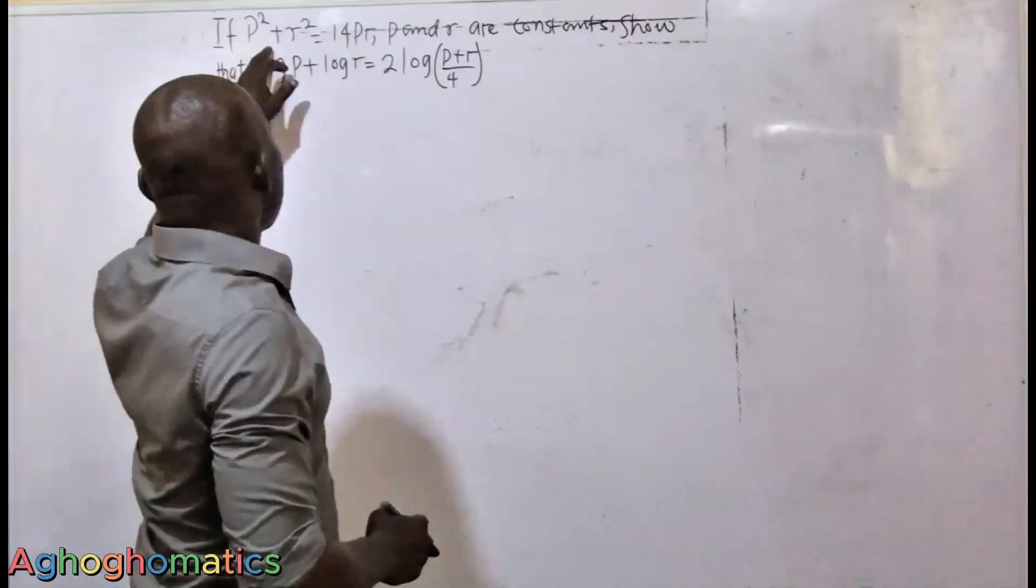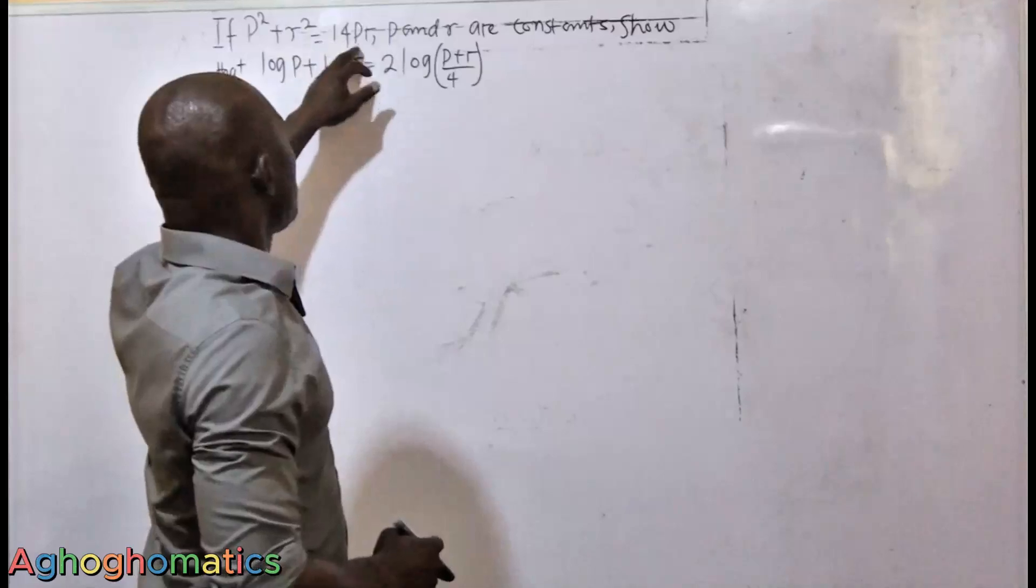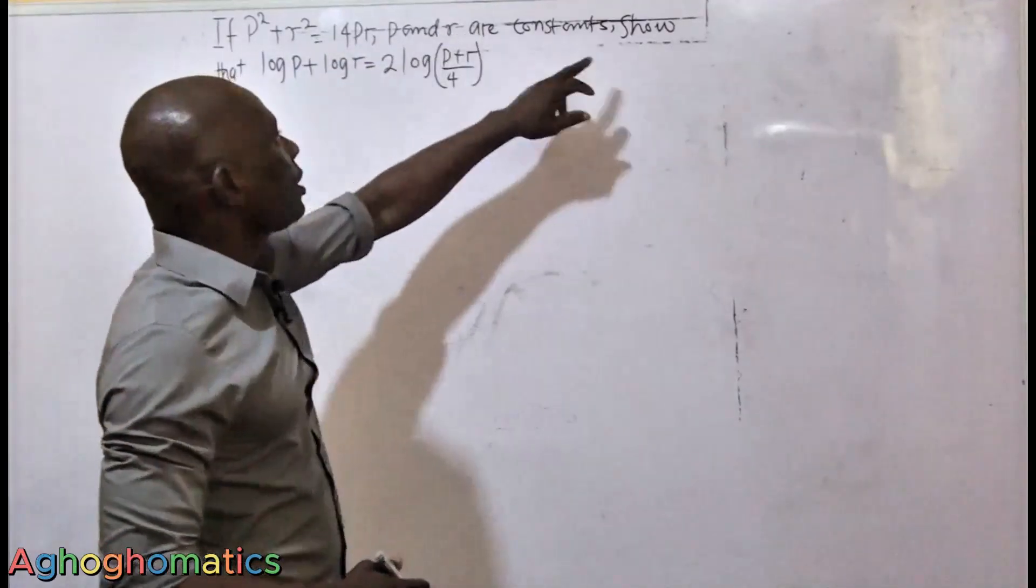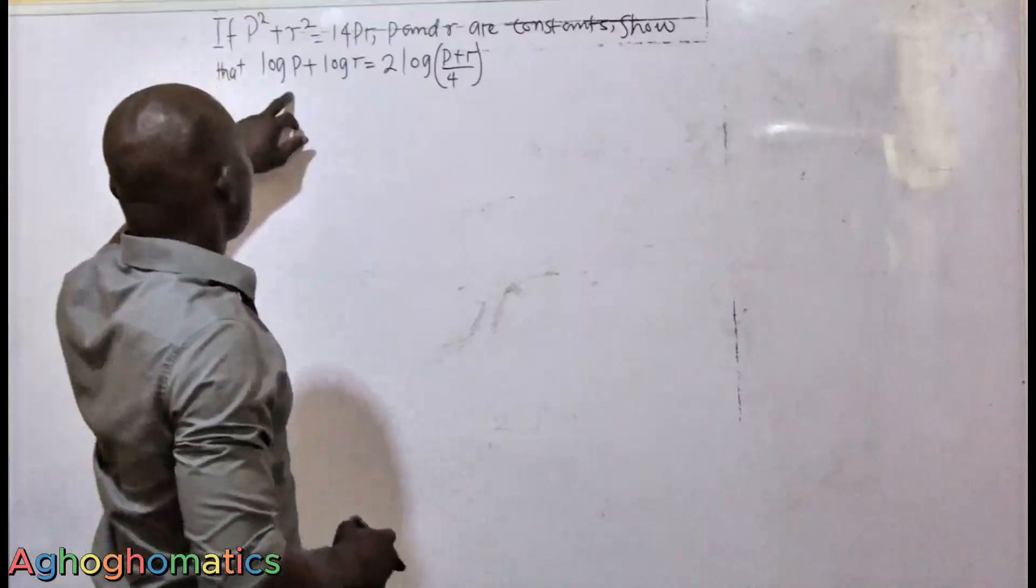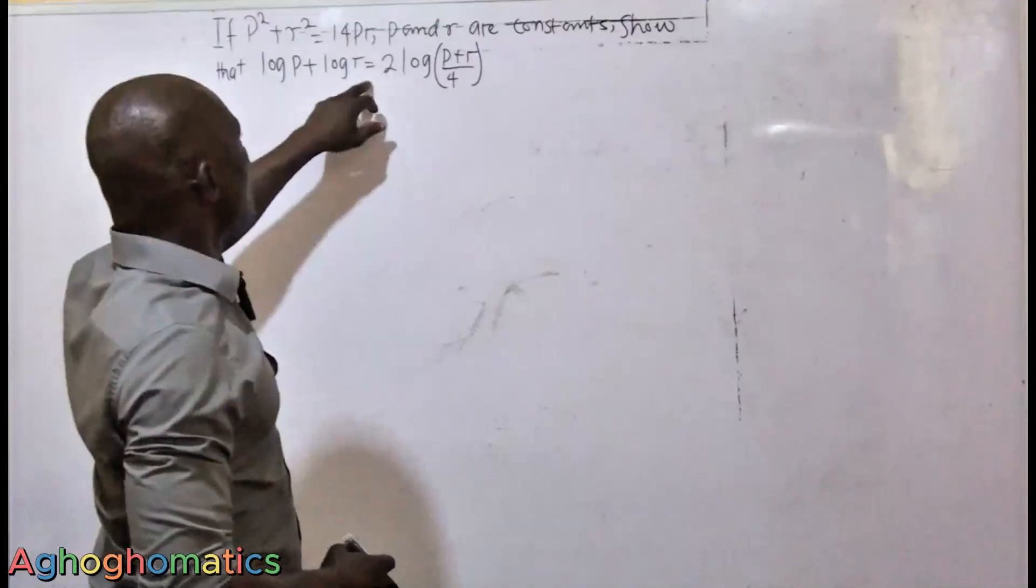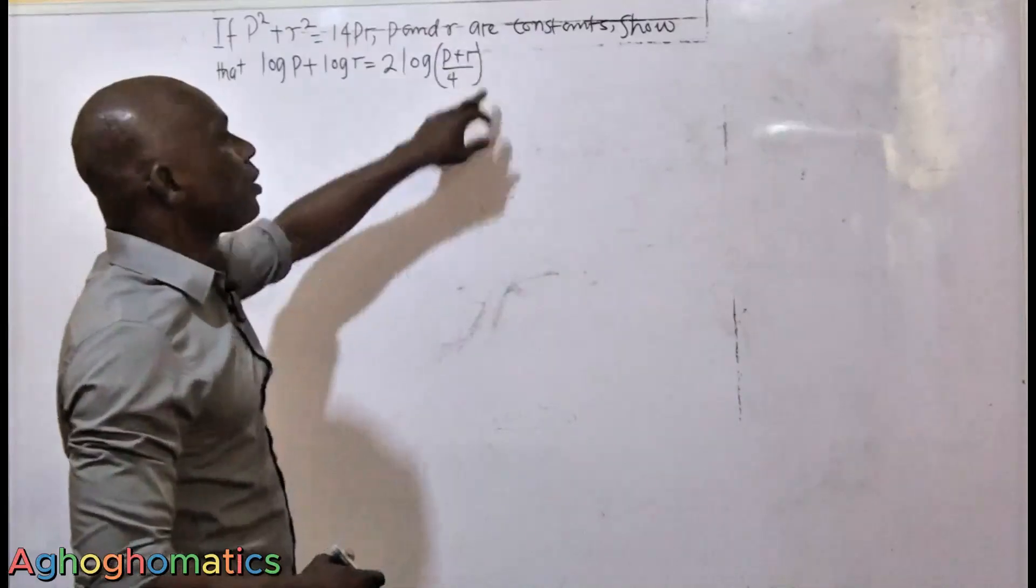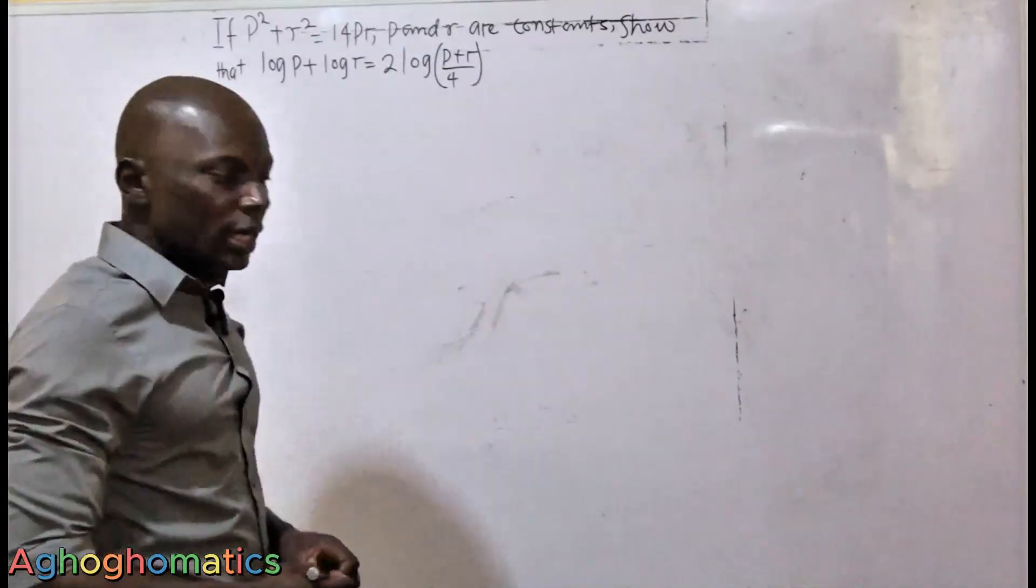If P squared plus R squared is equal to 14PR, and P and R are constants, show that log P plus log R is equal to 2 log of (P plus R) over 4.